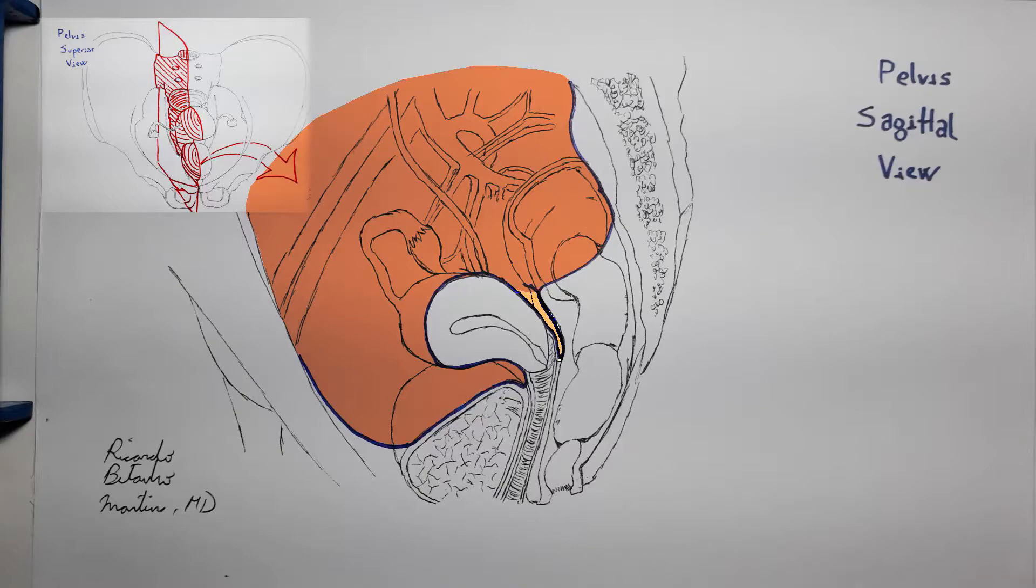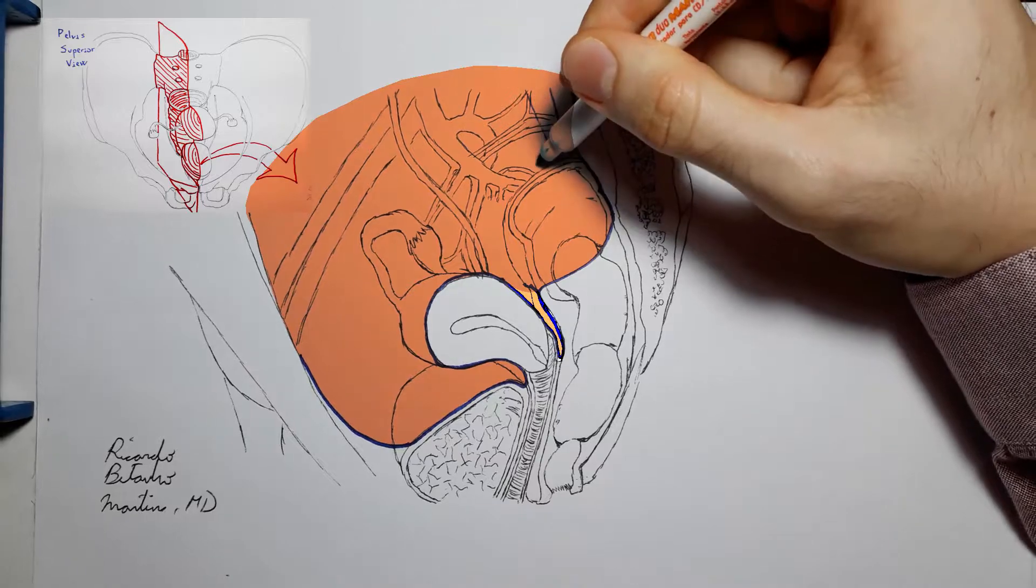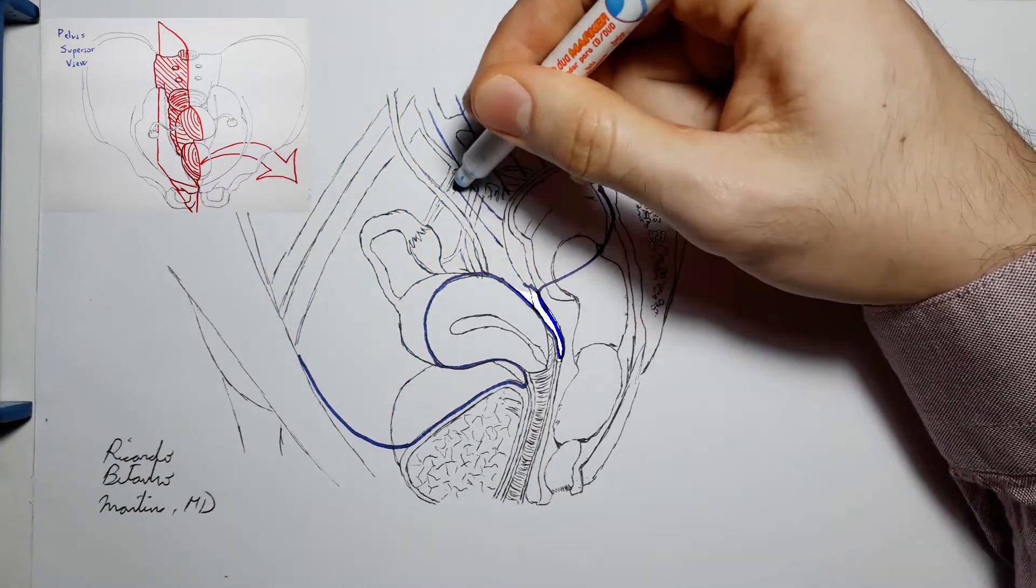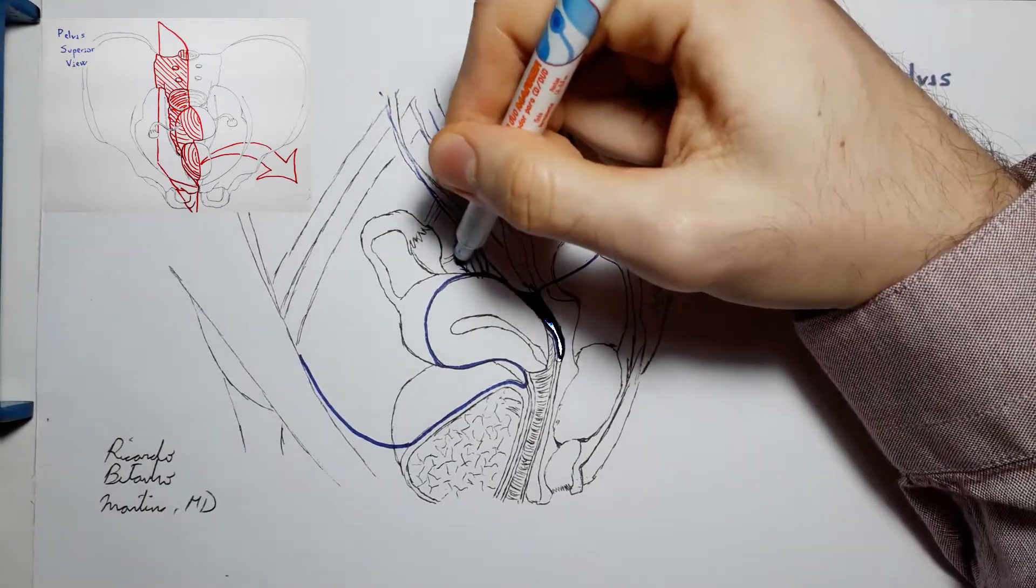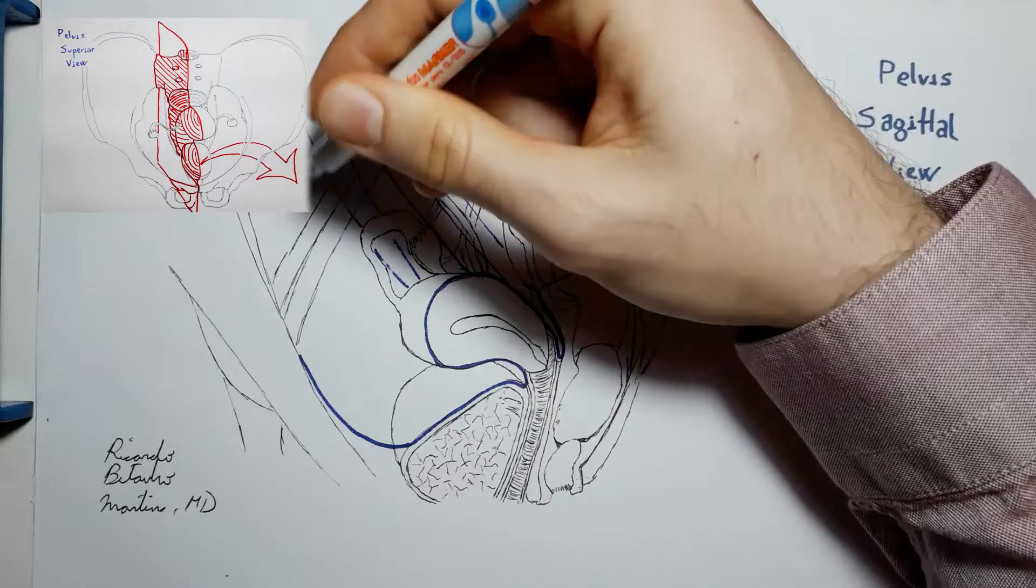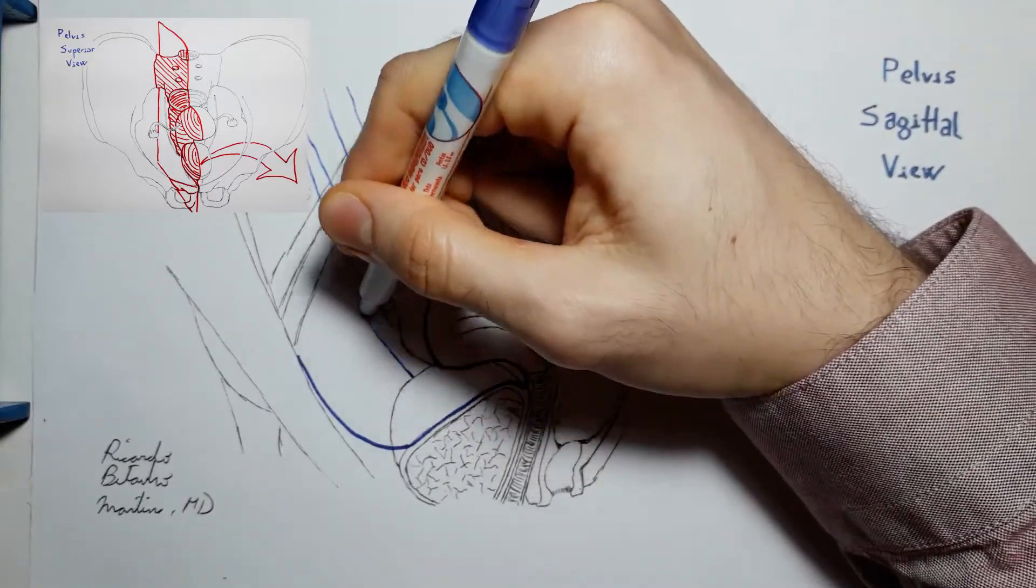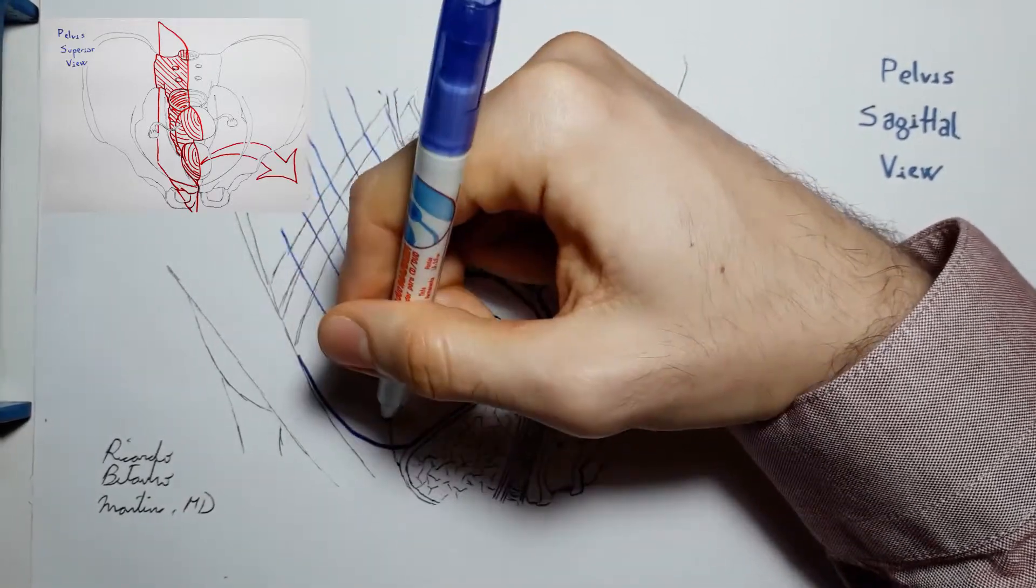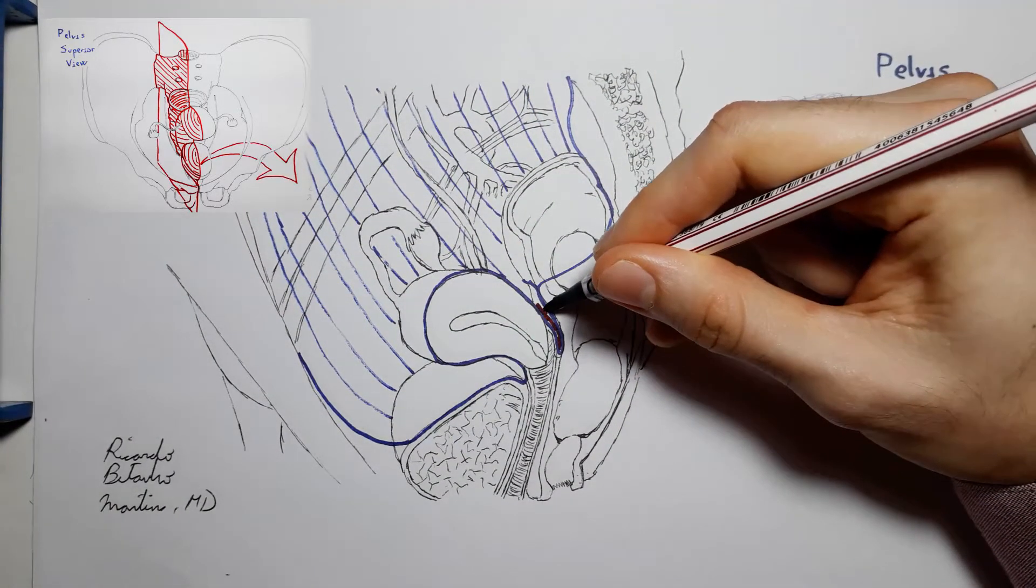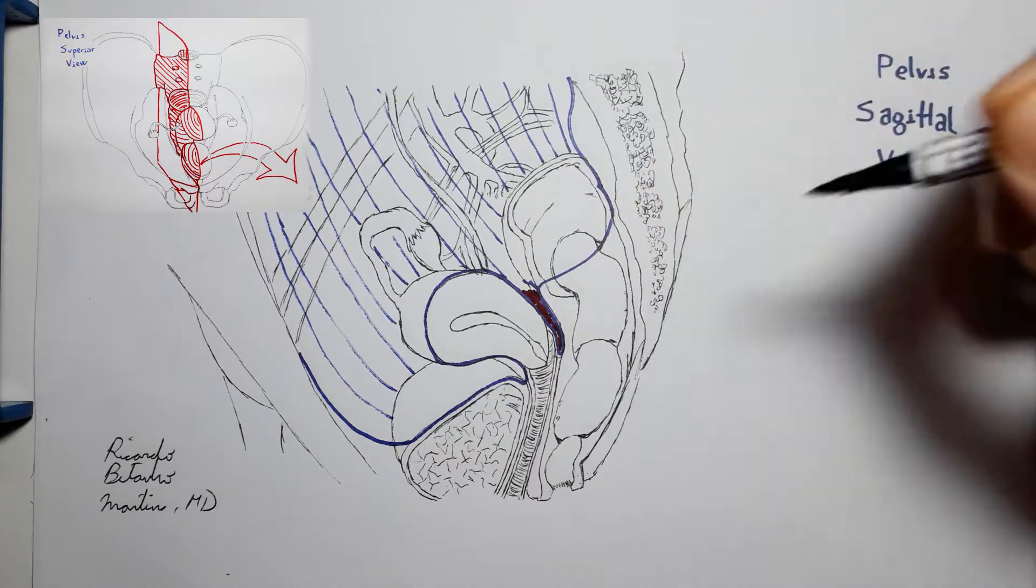The pouch of Douglas, in fact, is the most dependent portion of the abdominal cavity, the lowest hanging segment of the peritoneal cavity. And therefore, thanks to the action of our friend gravity, unless you happen to be an astronaut orbiting Earth, the place where all the fluid from the abdomen will tend to drain to, and then accumulate.